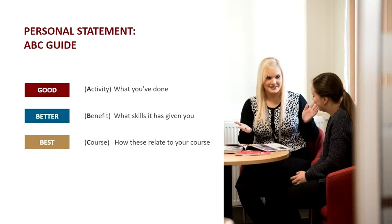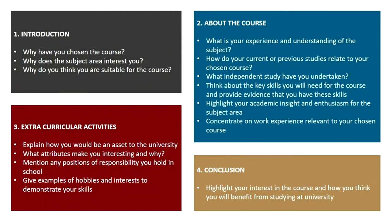I like to think of things as an ABC guide. Tell us the activity — what you've done — that's good. Tell us the benefits, the skills it's given you — that's better. But the absolute best practice is where you relate everything back to the course you're applying for. Get a sheet of A4 or A3 paper and split it into four quarters: one for the introduction, one about the course, one for extracurricular activities, and one for the conclusion. Bullet point the different things you might want to cover — like an essay plan. As you type your draft, put a little tick next to each thing. You can do this plan over a period of days, adding ideas as they occur to you.